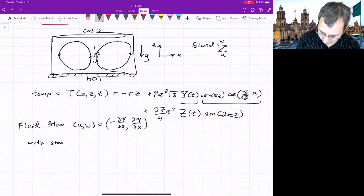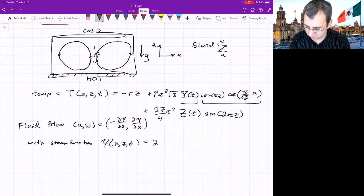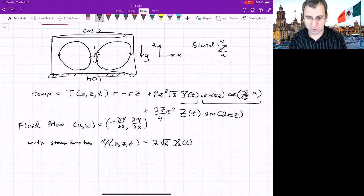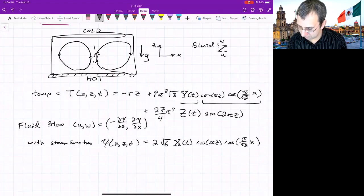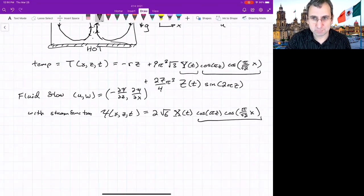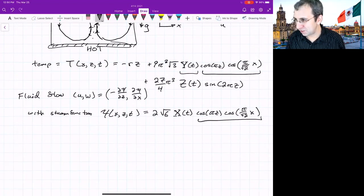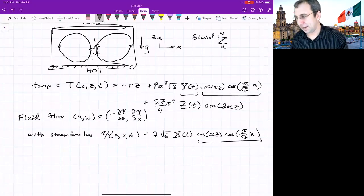With the stream function also expanded in terms of modes. So the stream function, X, Z, and T is equal to 2 square root 6, X. And now we've got capital X, the amplitude of the stream function, cosine πZ, cosine π over square root of 2 X, the same spatial mode as we have up there for the first mode of temperature. And then when you plug this into the PDEs that govern the motion, think of the Boussinesq equations if you're familiar with that, or Navier-Stokes, and then how temperature changes, we can get equations for how the coefficients capital X, capital Y, and capital Z change in time.